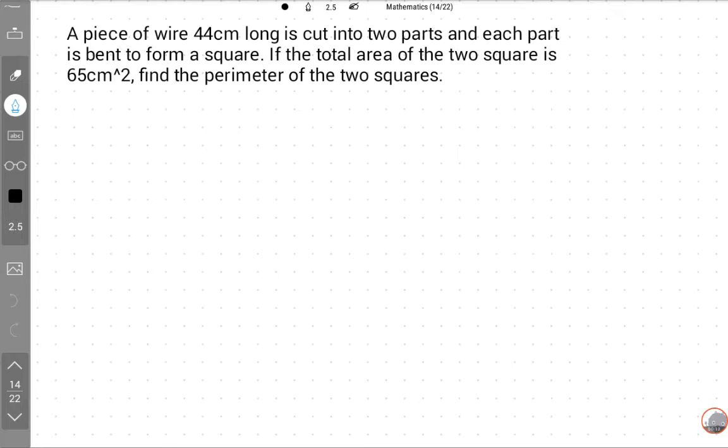44 cm long is cut into two parts and each part is bent to form a square. If the total area of the two squares is 65 cm squared, find the perimeter of the two squares.